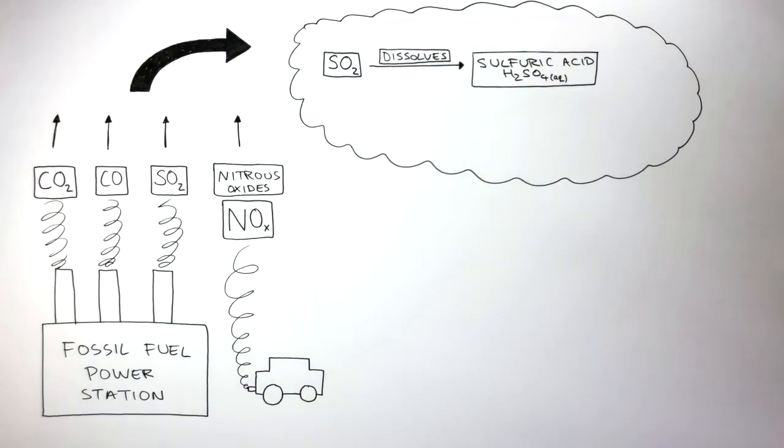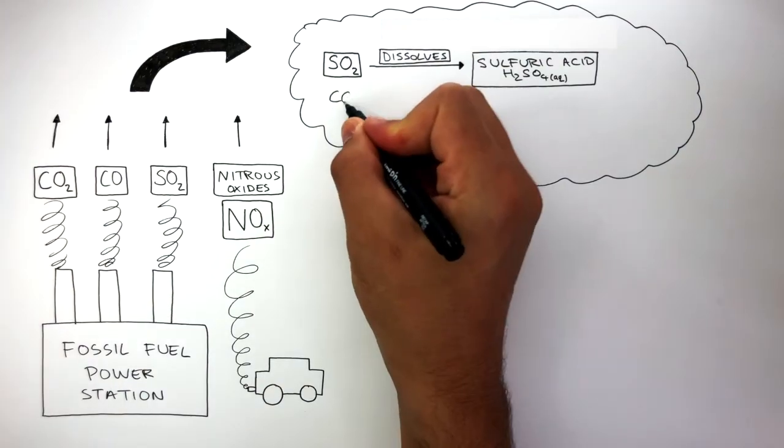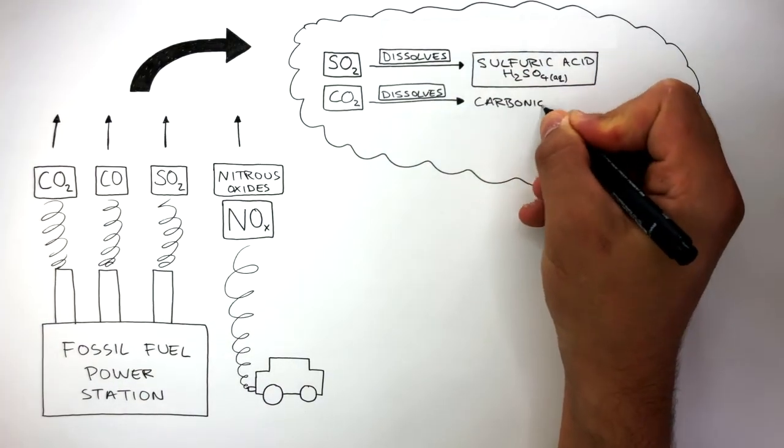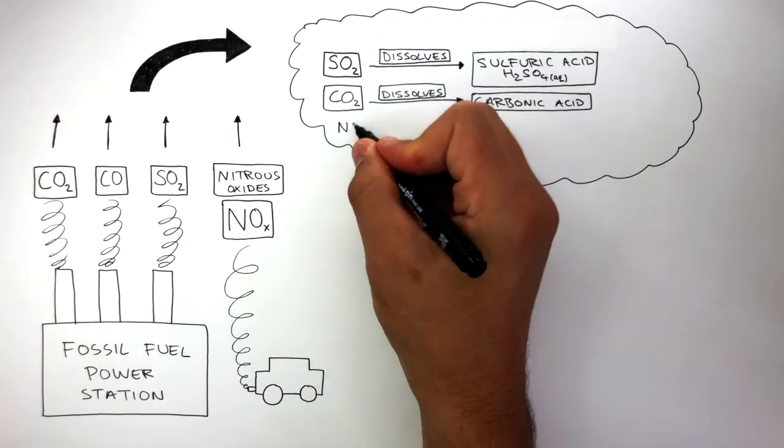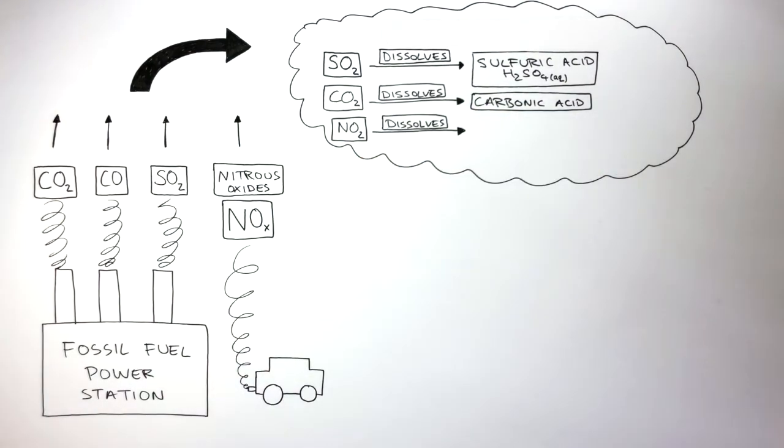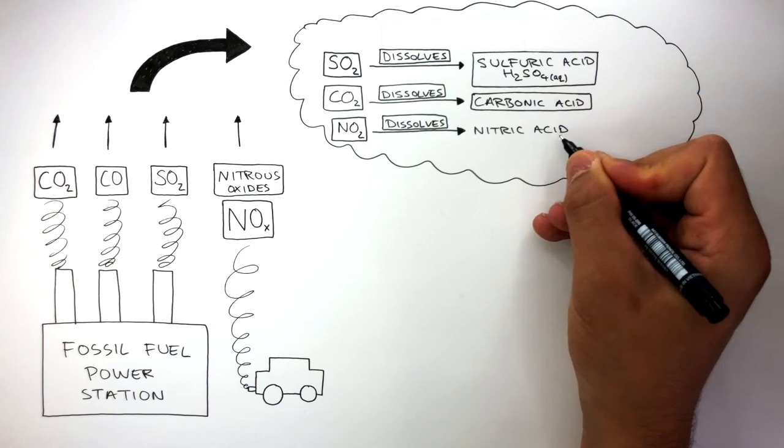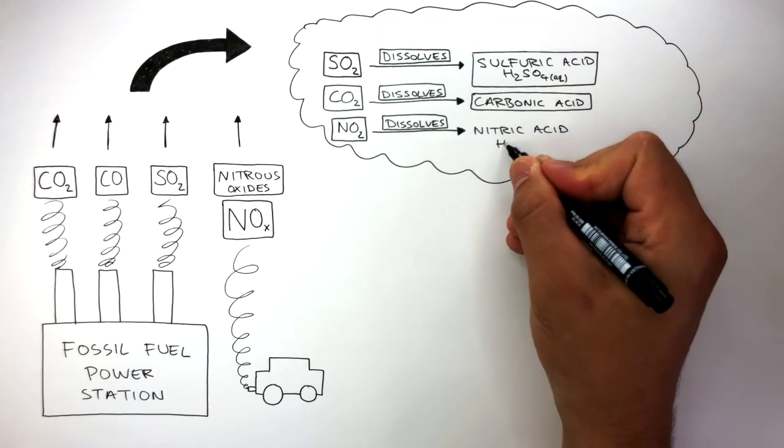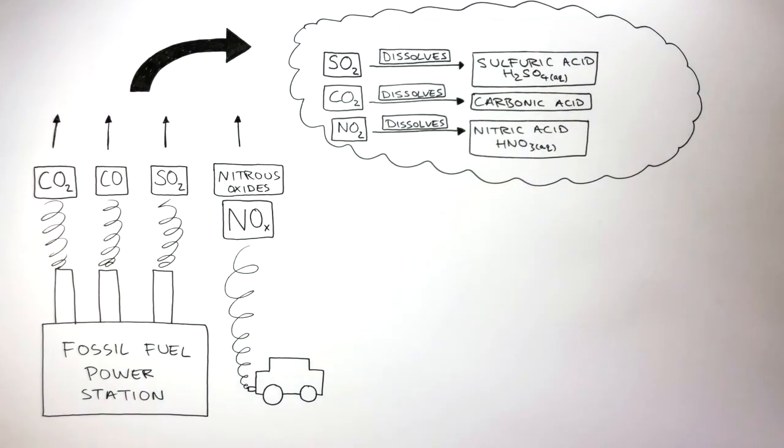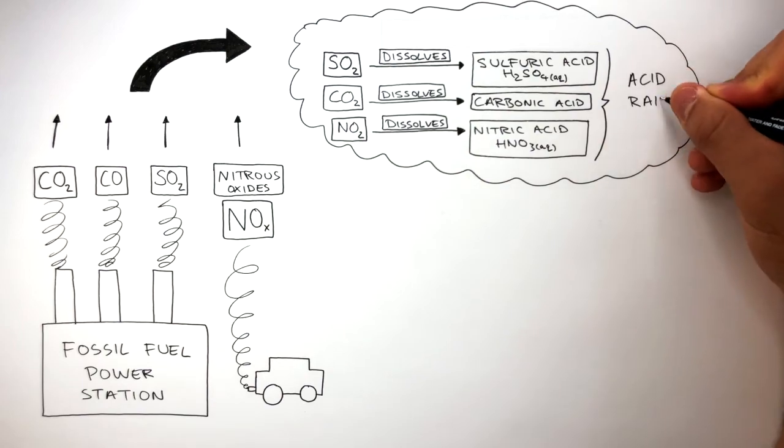The carbon dioxide also dissolves, forming carbonic acid. And nitrous oxide dissolves, forming nitric acid, which has a molecular formula of HNO3, AQ for aqueous. All three acids are dissolved in water. All three acids contribute to acid rain.